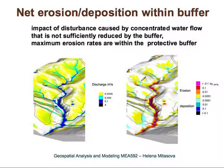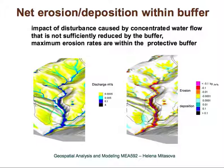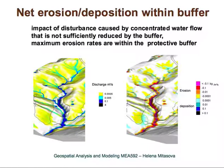In detail, you can see that the highest erosion rates will be within this buffer. Sheet flow produces relatively low erosion rates and low sediment flow that can be deposited within the buffer. So the buffer will protect against relatively low erosion rates. But if we have a lot of concentrated water coming in, then the buffer is not very effective.